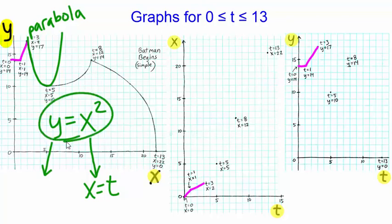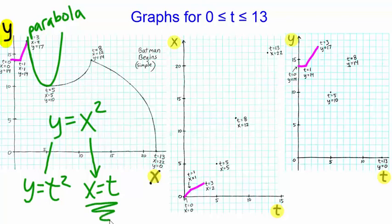Y is the square of x, and since x equals t, y is the square of t. This tells us that the x of t relationship is linear, and the y of t relationship is quadratic. Therefore, we'll connect the corresponding x of t points with a linear function, and then connect the corresponding y of t points with a quadratic function.